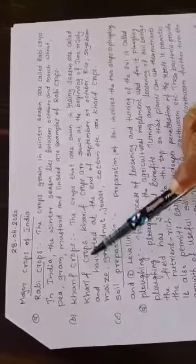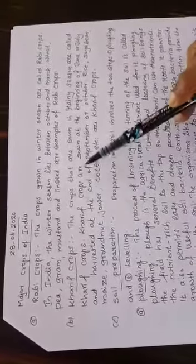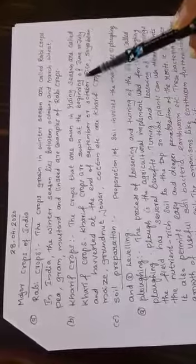Kharif crops. Kharif crops are sown at the beginning of June or July and harvested at the end of September or October.